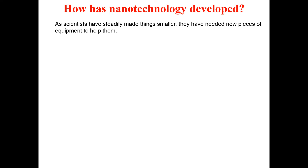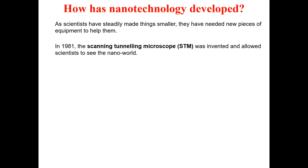The fourth question: how has nanotechnology developed? The rapid development of nanotechnology started with the development of modern equipment. Without modern equipment, development of nanotechnology was like a dream. The most remarkable event occurred in 1981 when scientists developed the scanning tunneling microscope (STM), which allowed scientists to see the nano world for the first time.